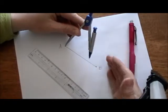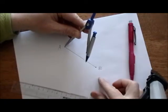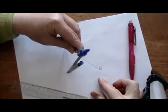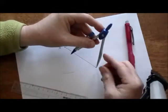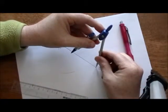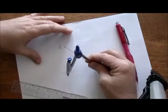And scribe an arc centered at point A. Now we're going to change over and center our compass on B, and do the same thing, scribe an arc.